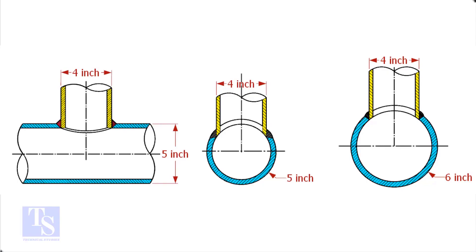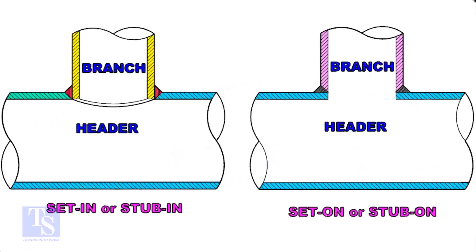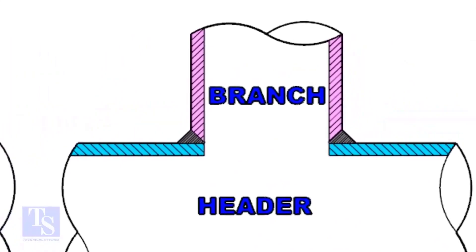Watch the section side view carefully. Check the stub-on view. The branch pipe sits on the header.